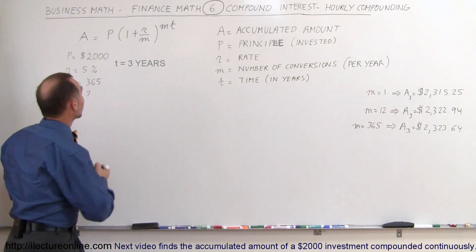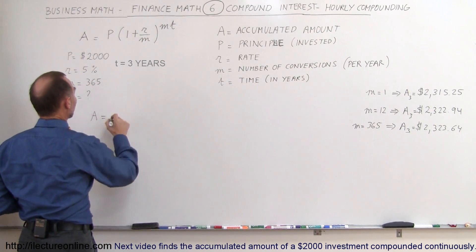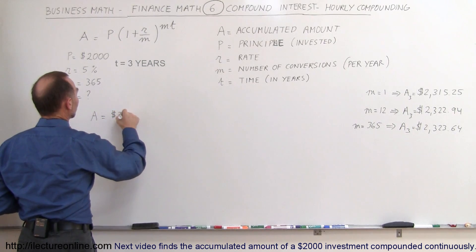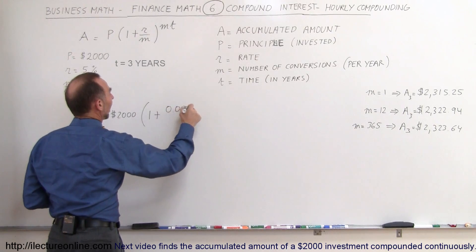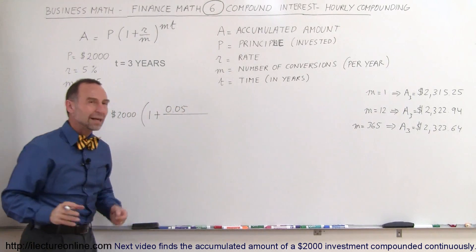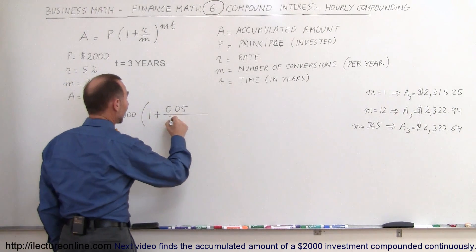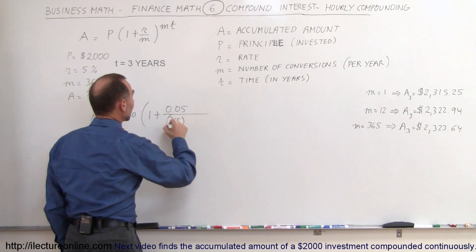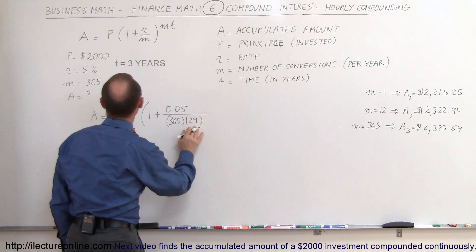We use the same equation. The accumulated amount equals the principal invested. We put $2,000 in an account, the rate is 5%, and now the number of conversions would be how many hours in a year. Let's say there's 365 days in a year and in each day there's 24 hours, so M would be 365 times 24.